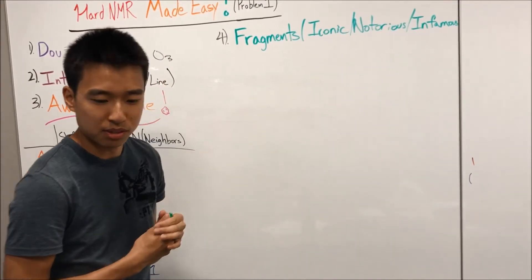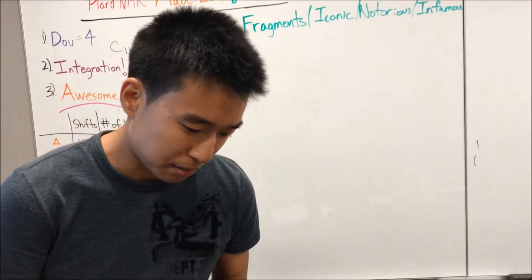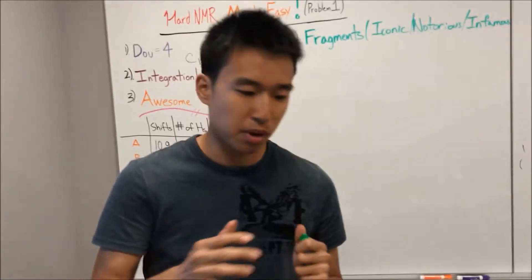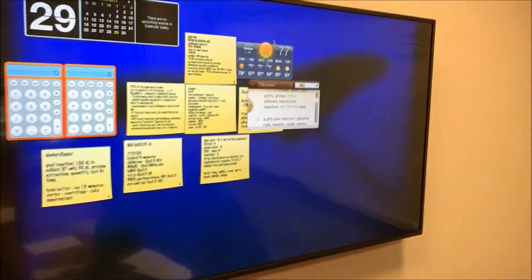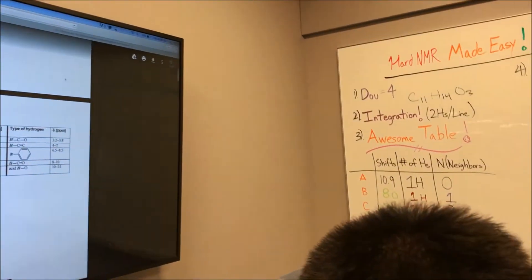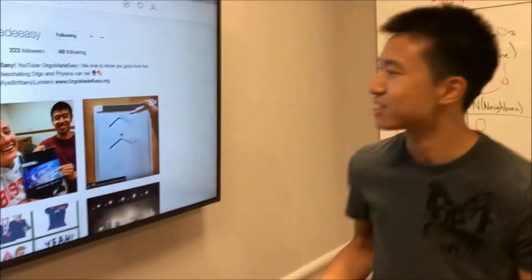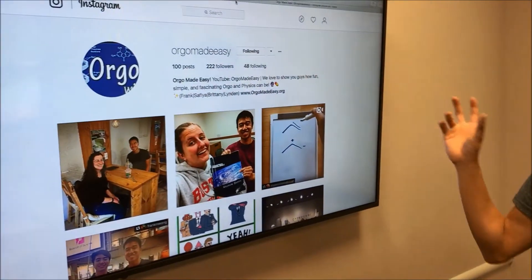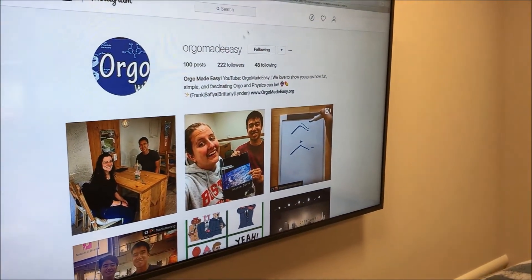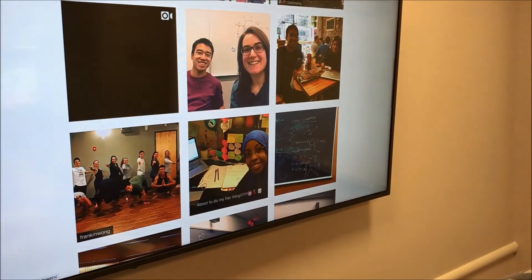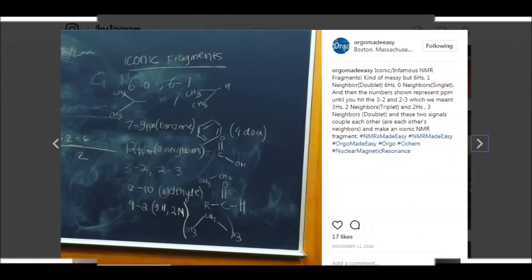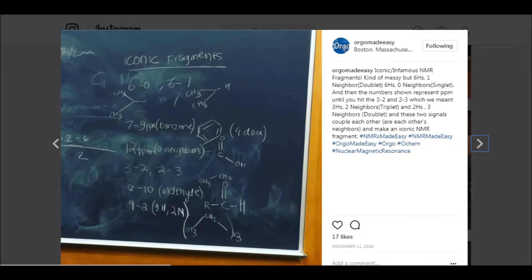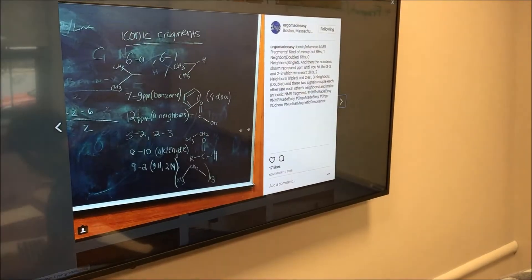Yeah, iconic, notorious, infamous, or choice. So my fragments and more detailed page is actually on Instagram, which is nowhere to be found. Okay, perfect. My Notorious Fragments post is on Instagram, and if you scroll down here, right here.